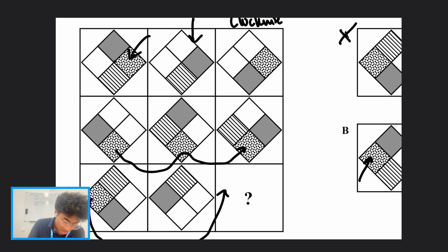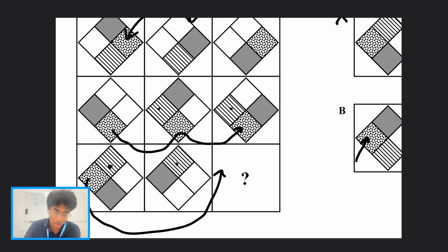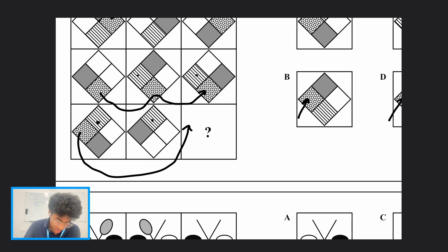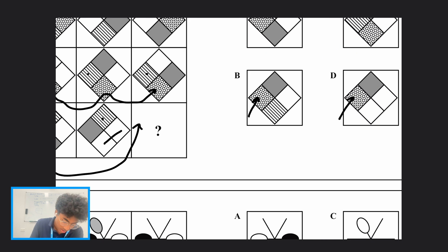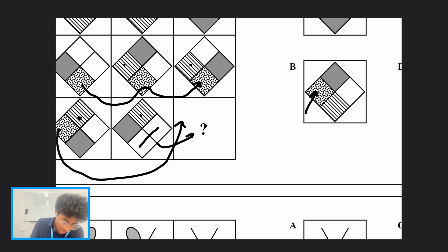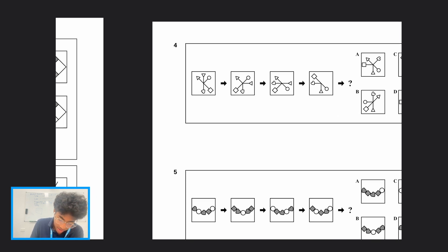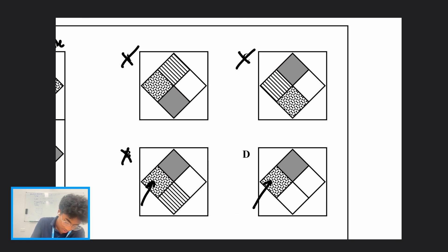We can see the same logic for the white squares — these white squares don't actually move, and neither do the stripes. They only go missing because the gray square covers them. So in the mystery image there must be two white squares, since they don't move from image to image. That means option B is wrong, and the answer must be option D.